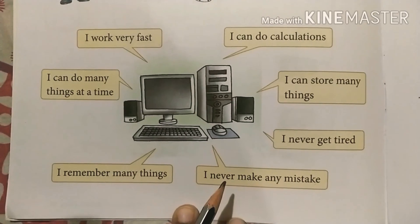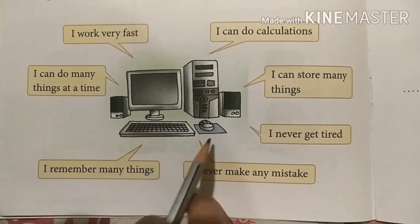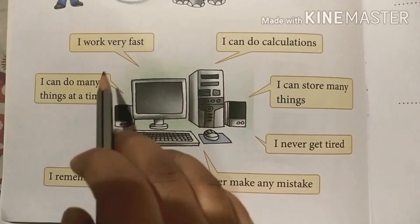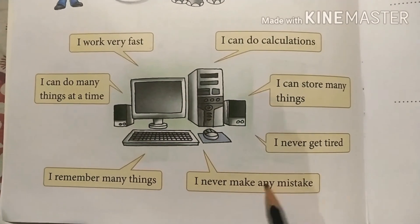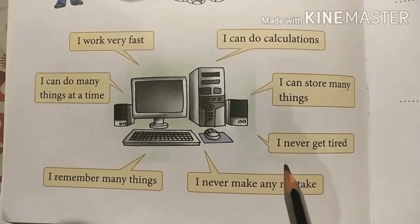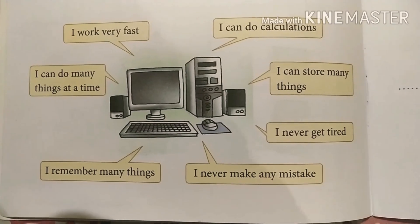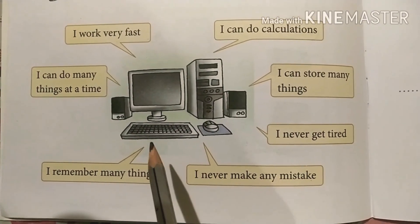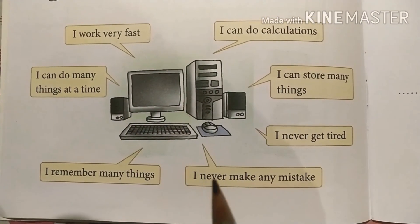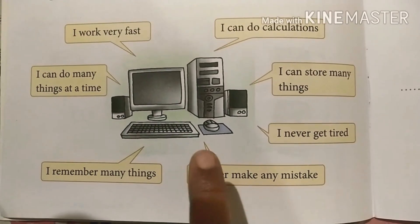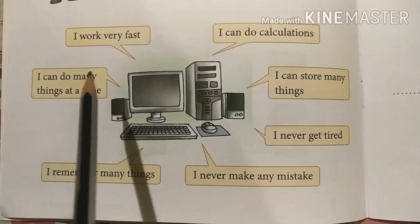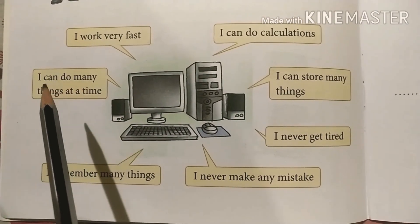Here you can see a computer, and these are all its features — yeh saare iske features hain. Feature means quality. So this computer is going to tell you about its qualities — yeh computer aapko apni quality ke baare mein batane ja raha hai. Listen very carefully.